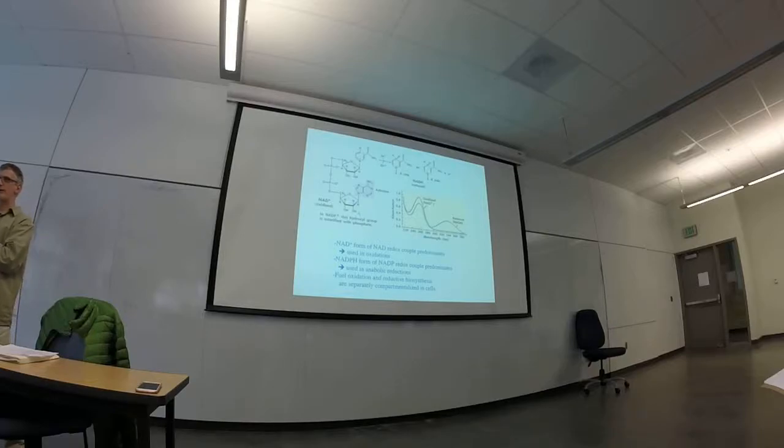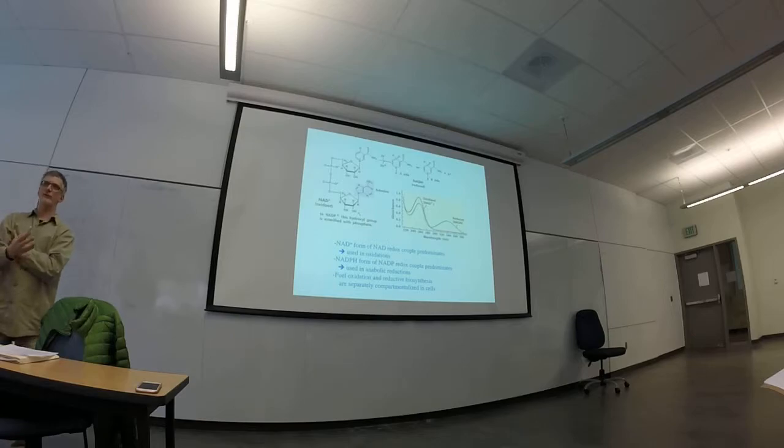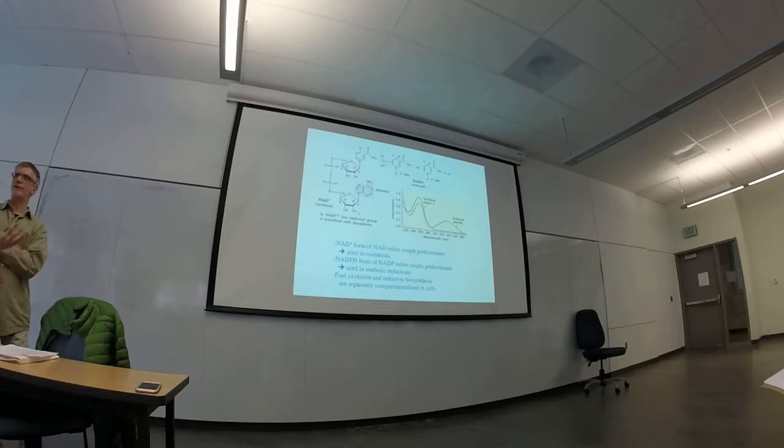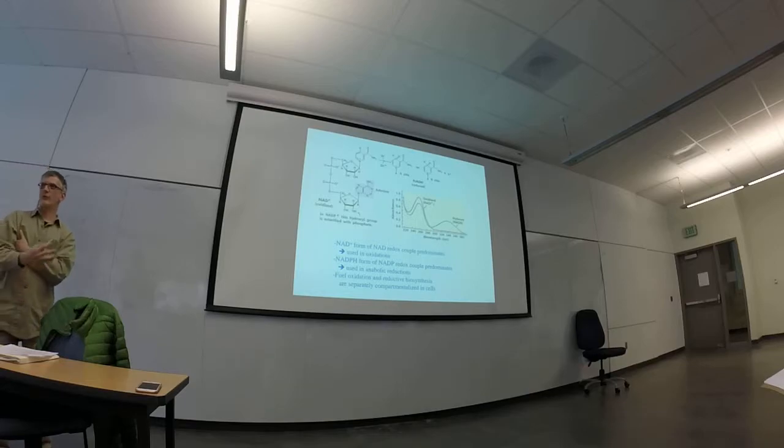are separately compartmentalized in cells. Burning fuel is generally compartmentalized in the mitochondria for aerobic cells that have mitochondria. I mentioned that the electron transfer reactions and the synthesis of ATP go on in the mitochondrial membrane, so it's efficient for the processing of the fuel to also go on in the mitochondria.